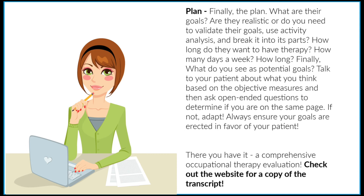Number four: plan. Finally, the plan. What are their goals? Are they realistic? Or do you need to validate their goals, use activity analysis, and break it into its parts? How long do they want to have therapy? How many days a week? How long for each session? Finally, what do you see as potential goals? Talk to your patient about what you think based on the objective measures, and then ask open-ended questions to determine if you're on the same page. If not, adapt. Always ensure your goals are erected in favor of your patient.